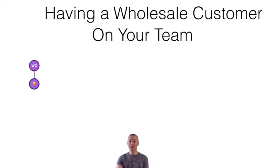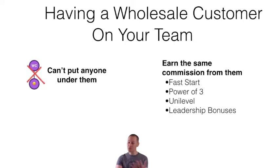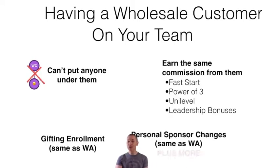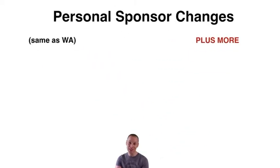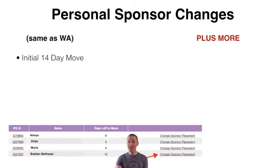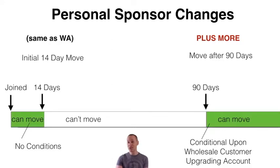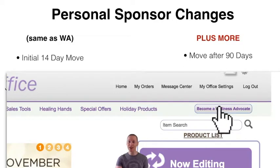Having a wholesale customer on your team means that you can't put anybody under them. You still earn the same commission from them. You can change their enrollment status or personal sponsor status in the same way as a wellness advocate — you have 14 days to change that. Or after 90 days, if they upgrade to a wellness advocate account, you can change their sponsorship status. They simply log in and click on becoming a wellness advocate.